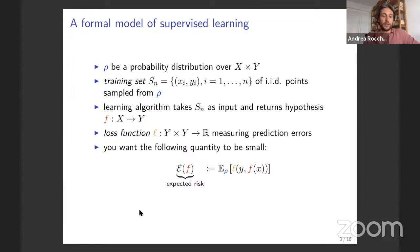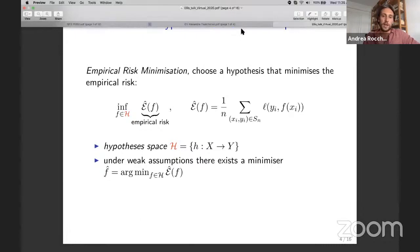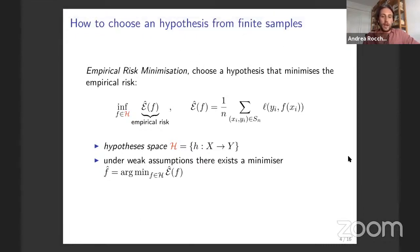This quantity is not really computable because we don't have access to rho, only to samples from it. The prescription commonly used is empirical risk minimization: choose a hypothesis that minimizes the empirical risk, computed on your training set. The algorithm picks this hypothesis from a hypothesis space — where it looks for the best candidate. We use the weak assumption that there exists a minimizer of the empirical risk in the hypothesis space.